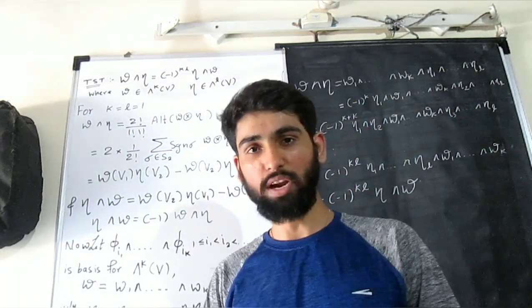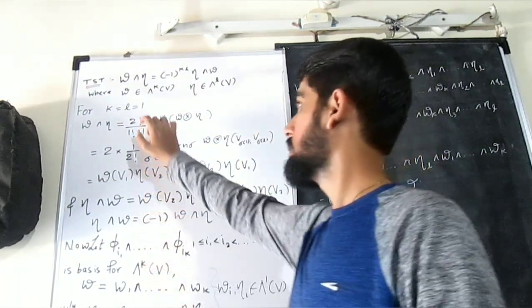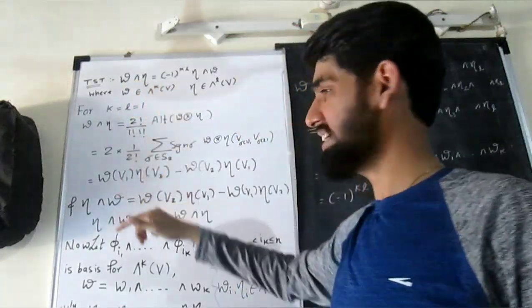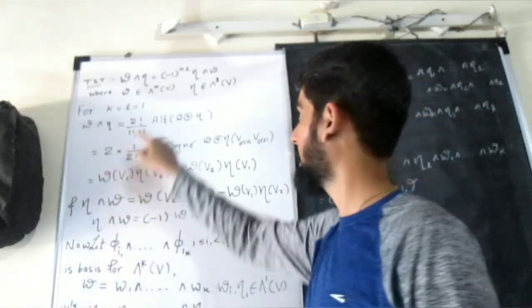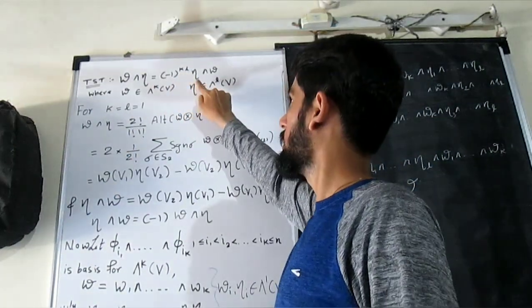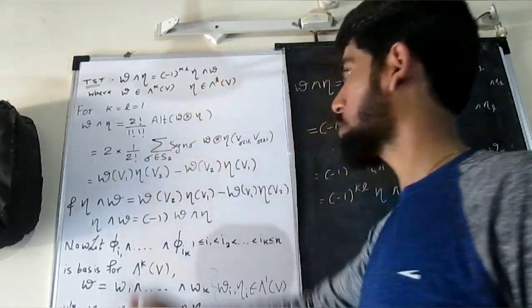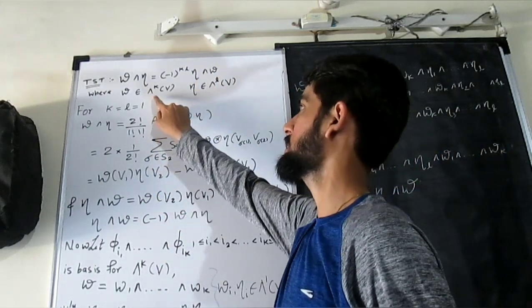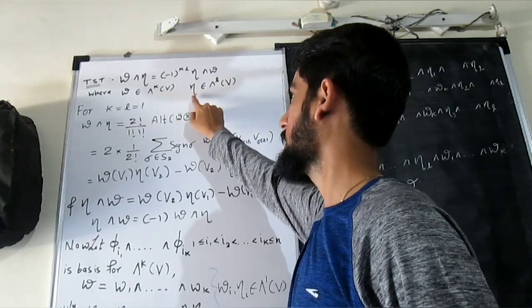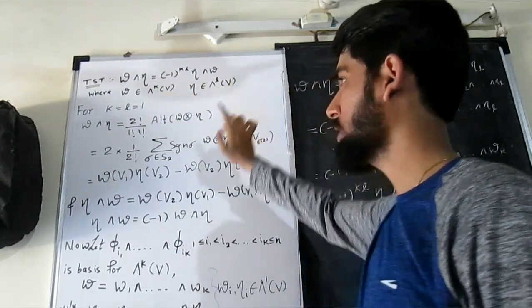Hello guys, so in this video we are going to prove that omega wedge with eta is same as minus 1 raised to kl, eta wedge product with omega, where omega is an element of k-form on V and eta is an element of l-form of V.